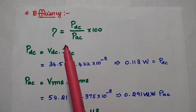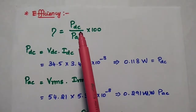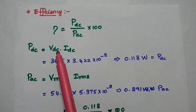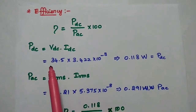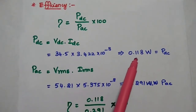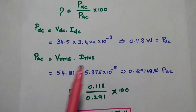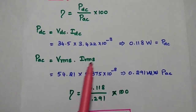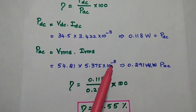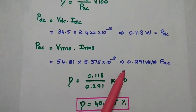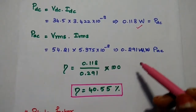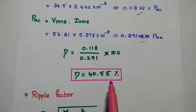To find the efficiency in percentage, we compute DC output power = Vdc × Idc = 34.5 × 3.422 × 10⁻³ = 0.118 W, and AC input power = Vrms × Irms = 54.21 × 5.375 × 10⁻³ = 0.291 W. Efficiency = (0.118 / 0.291) × 100 = 40.55%.